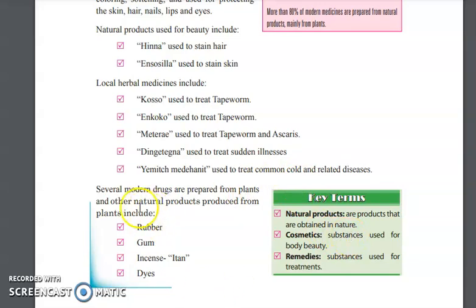Modern drugs and other natural products which we can produce using plants include rubber, gum, incense, wax, and dyes. These are natural products produced from plants.